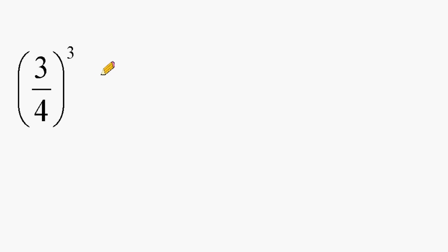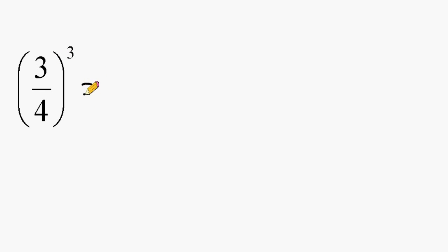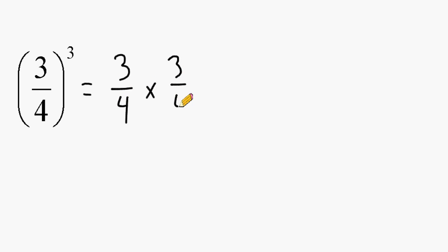With this first example, we have 3 fourths raised to the third power. Notice that this exponent of 3 is attached to the parentheses, which means everything inside the parentheses should be raised to the third power. So we are going to write 3 fourths to the third power in expanded form: 3 fourths times 3 fourths times 3 fourths.